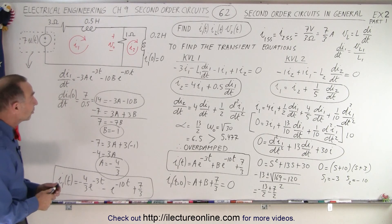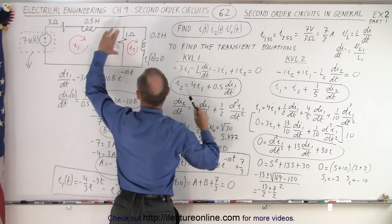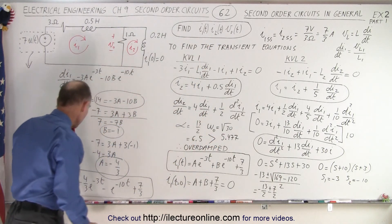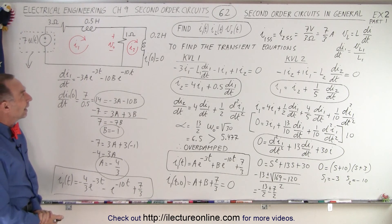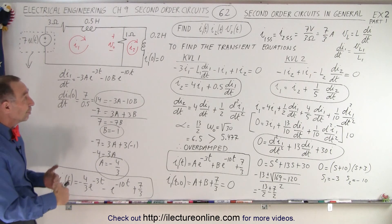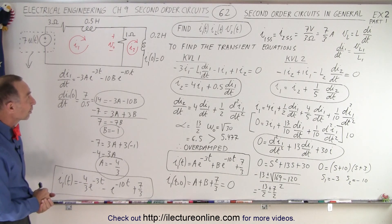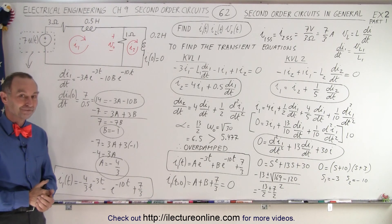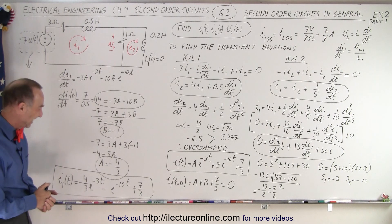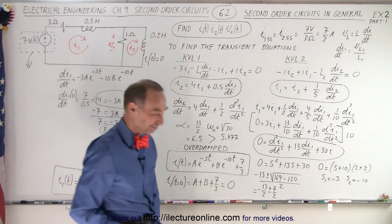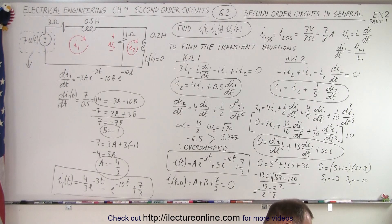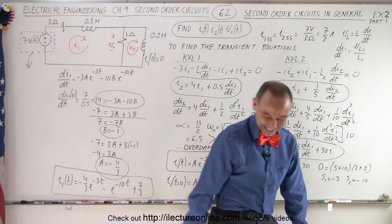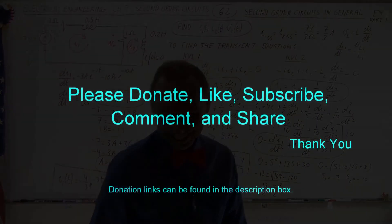We still need to find the current in the second mesh and the voltage across the resistor as functions of time. We've gotten through the big chunk of this problem, so we'll need another video to find those remaining two items. And we can verify the result is correct. Thank you.